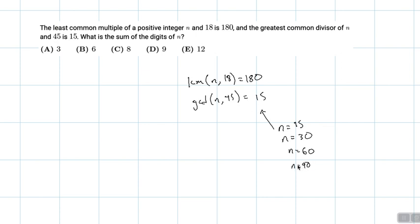What about when n equals 90? Because 90 goes into 180. I'm not going to test n equals 90 because the greatest common divisor of 90 and 45 is 45, not 15.